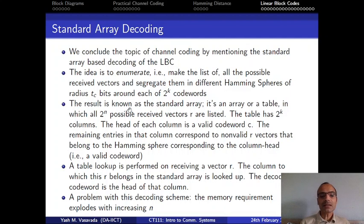And the idea behind the standard array decoding is to do a table lookup. Whenever we receive a vector r, we look up which column this r vector belongs to in the standard array. And then we just say that the head of that column, meaning the center of that Hamming sphere, is the most likely transmitted codeword.